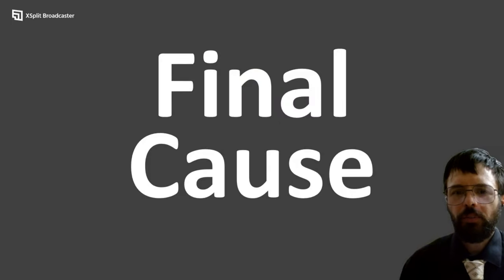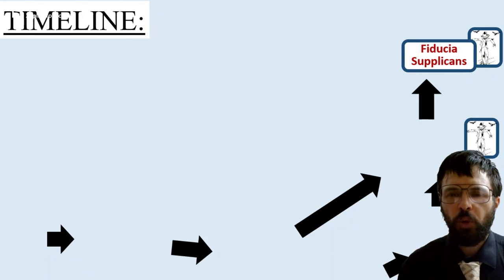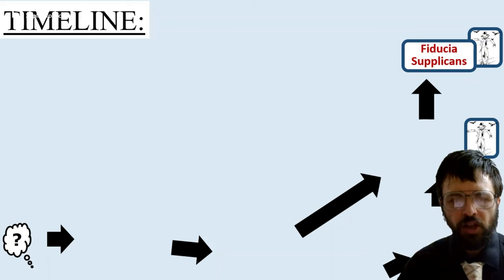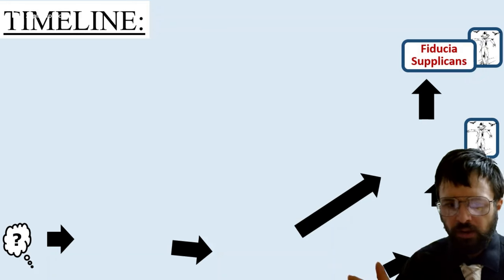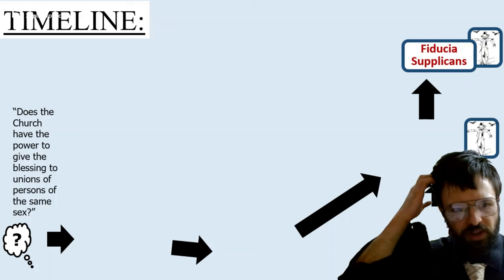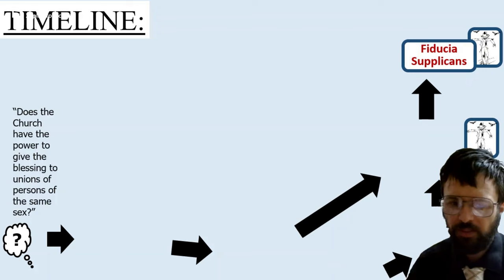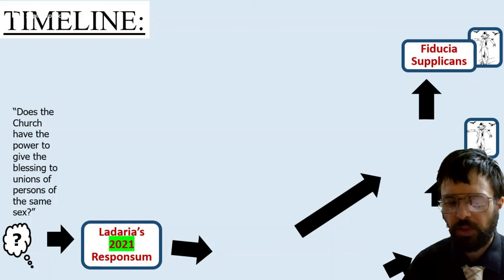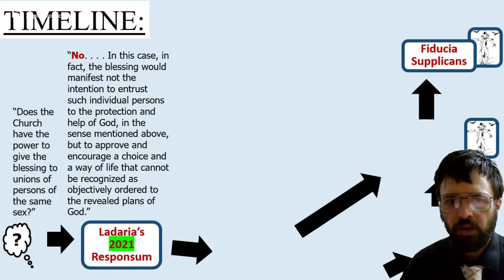You've made it to the most important part of this video: the final cause — the goal, purpose, and intent of Fiducia Supplicans. In final cause causology, we always want to plan things backwards — reverse planning. We want to look at the trail of steps that led to Fiducia Supplicans and analyze them. Originally we had a question: does the Church have the power to give the blessing to unions of persons of the same sex? And the Congregation for the Doctrine of the Faith, led by Cardinal Ladaria, responded in 2021: no. In that case, the blessing would manifest not the intention to entrust these people to God's protection, but to approve and encourage their choices and way of life that can't be objectively ordered to God.